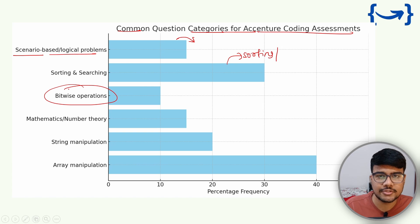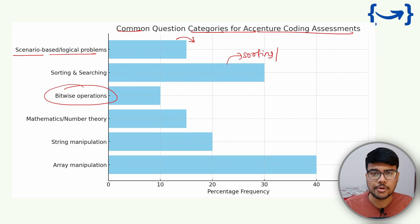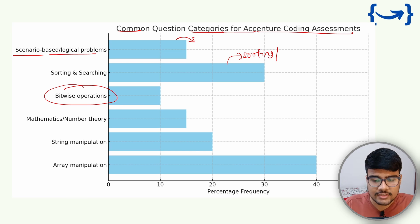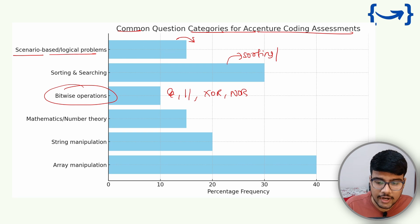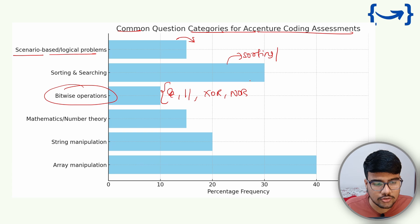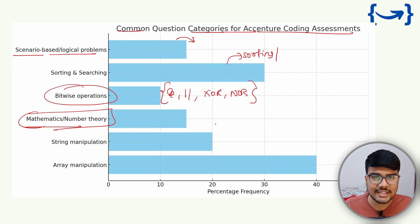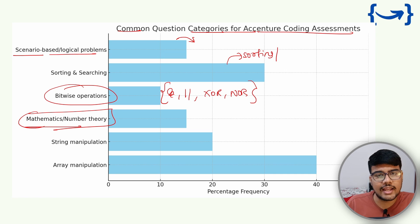Bitwise operators are the most commonly ignored subject, but in current shifts and the previous year questions we researched, bit manipulation questions appear — either using OR, AND, or XOR operations, co-prime or prime checks. You can expect these types of bitwise operation questions. You need to know AND, OR, XOR, NOR, and related operations. I highly recommend you watch these types of questions or all the shift solutions I uploaded.